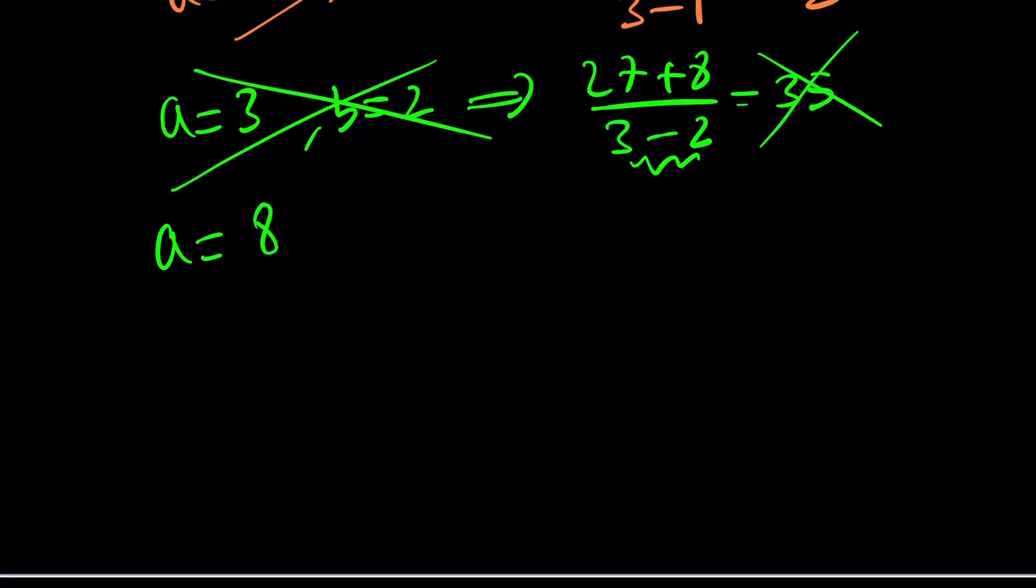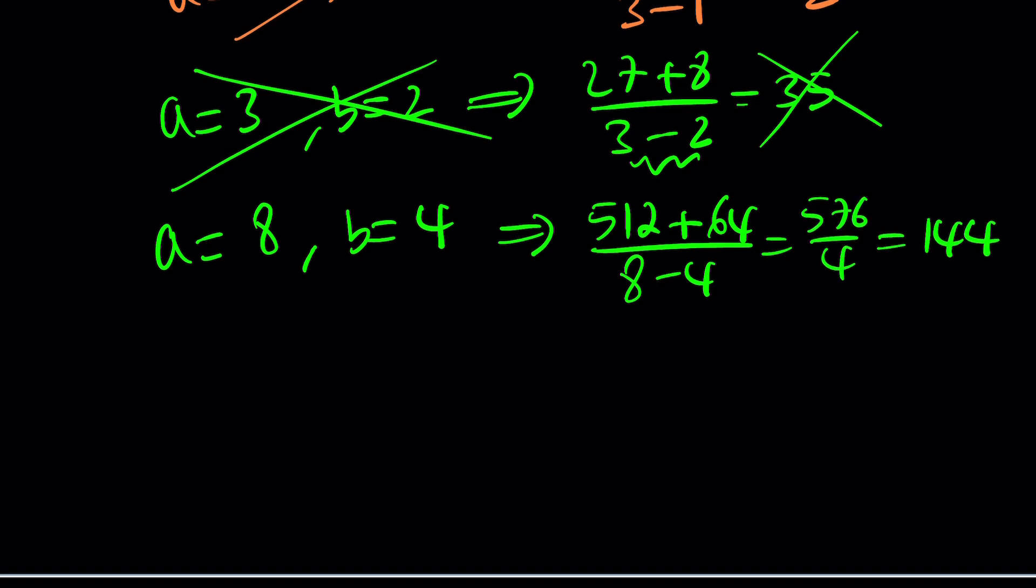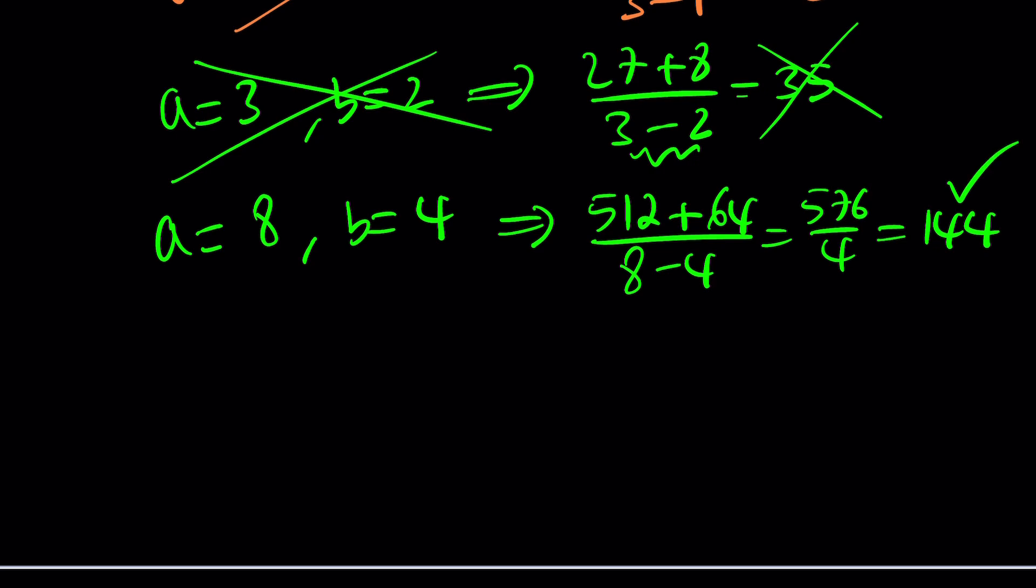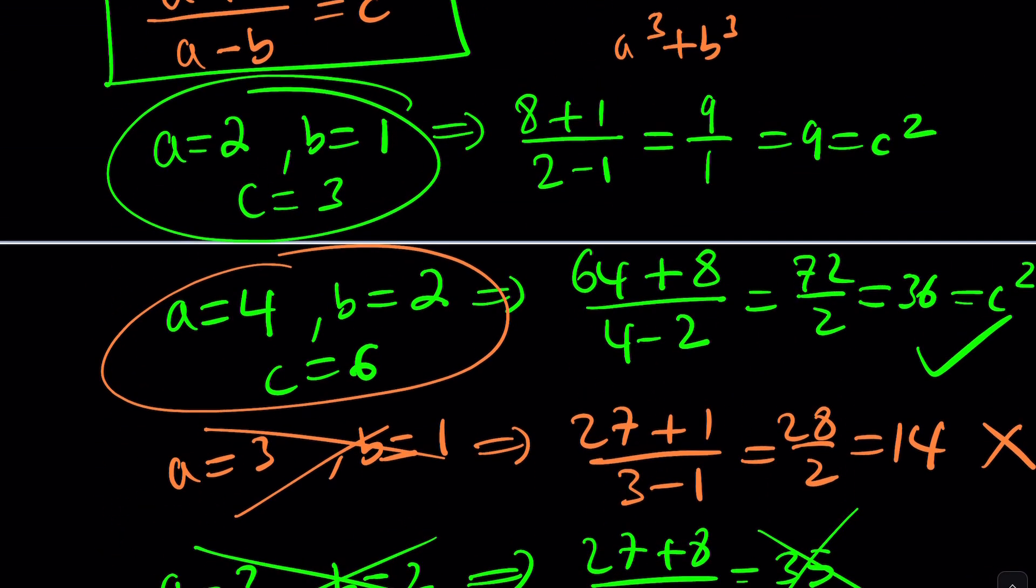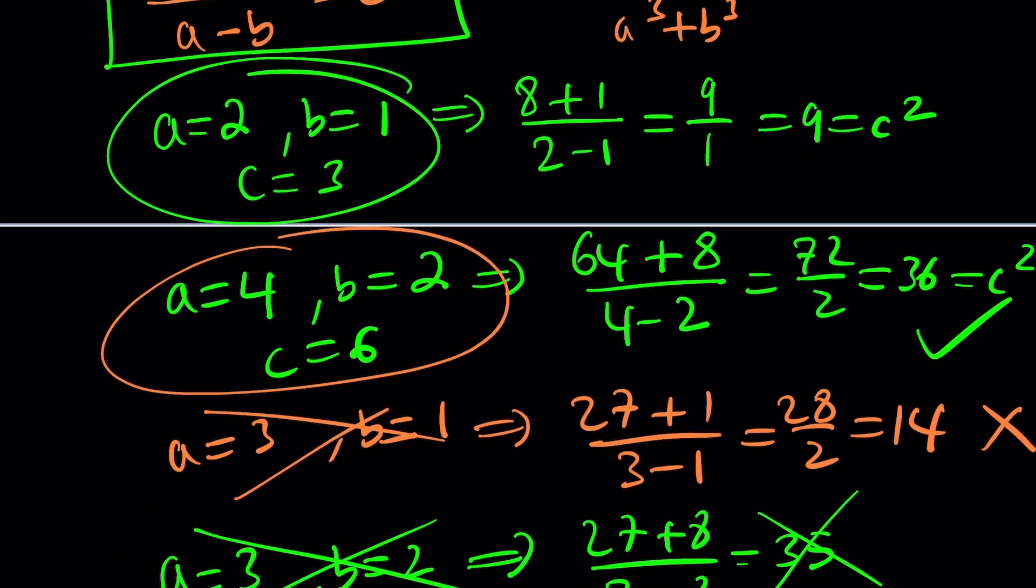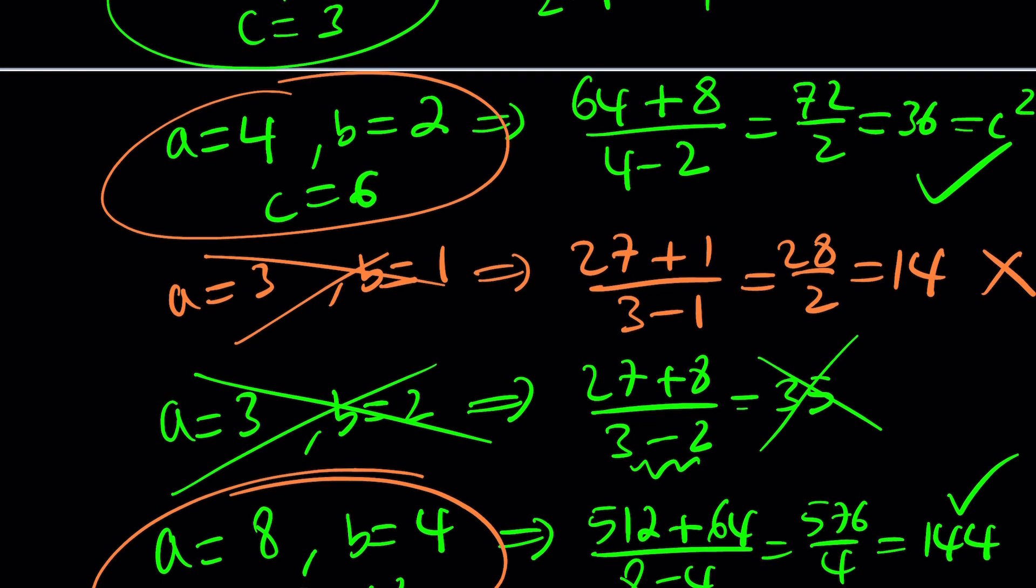How about the next one? Let's jump to 8. And a equals 8 and b equals 4. 8 cubed is equal to 512. b cubed is equal to 64, divided by 8 minus 4. This is 576, divided by 4. And that should be 144. Another perfect square. Yay! So, this works as well. Notice that we get a bunch of solutions that work, and some solutions that don't work.